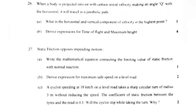A cyclist speeding at 18 km per hour on a level road takes a sharp circular turn of radius 3 meters without reducing speed. The coefficient of static friction between the tires and road is 0.1. Will the cyclist slip while taking the turn? Why?